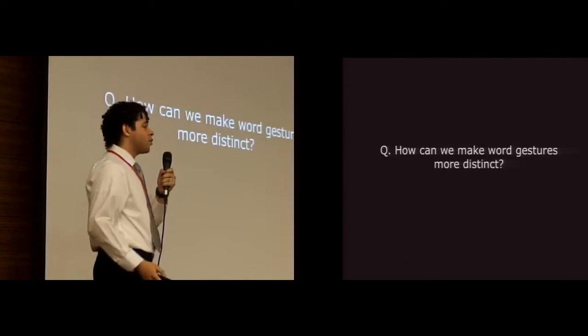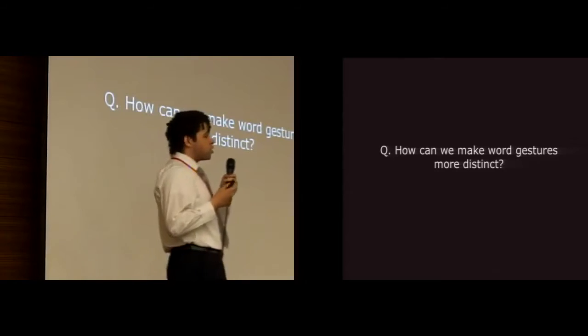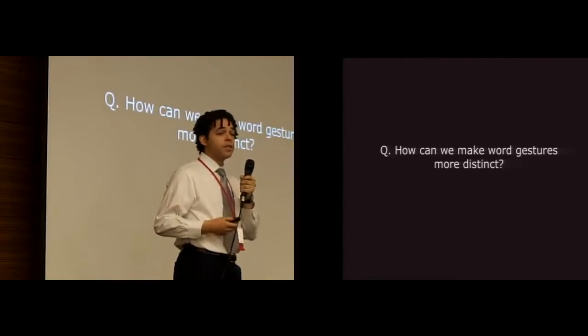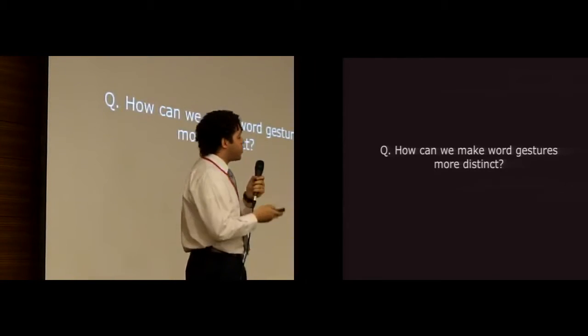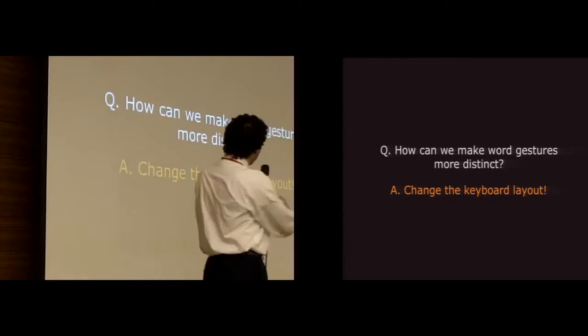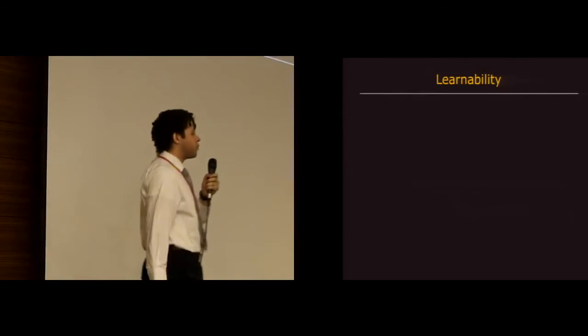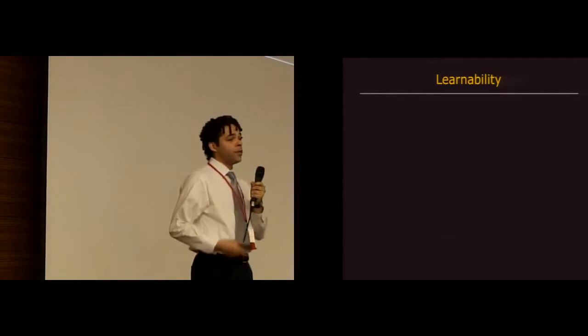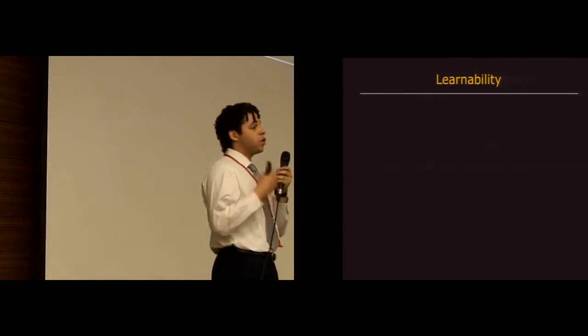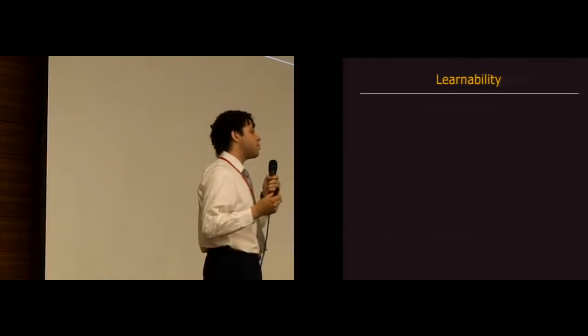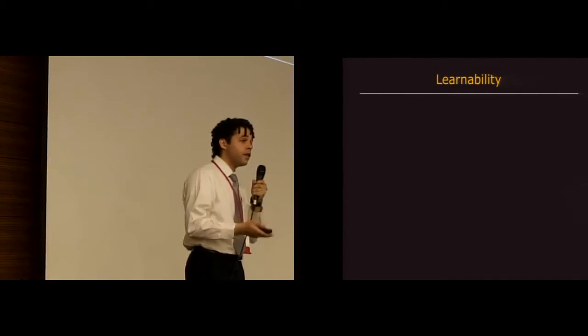So then that raises the question: How can we make word gestures more distinct? The answer is to reposition, change the positions of letters on the keyboard. That means we have to change the keyboard layout. But this raises a whole host of issues. First and foremost being learnability, right?